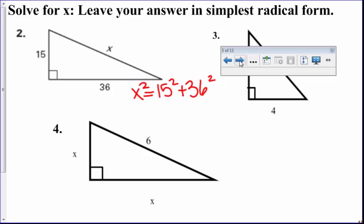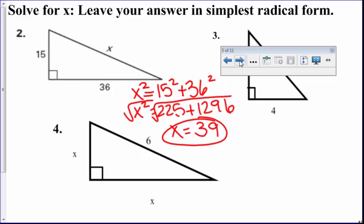Once we do that, we notice that X squared equals 225 when we square this, and 36 squared is 1,296. Once we combine like terms and solve for X and square root everything, you should get X to be the whole number 39. Since it's a whole number, we don't have to do simplest radical form, so we'll keep it like this.